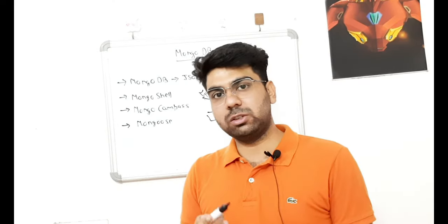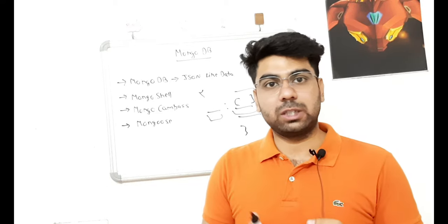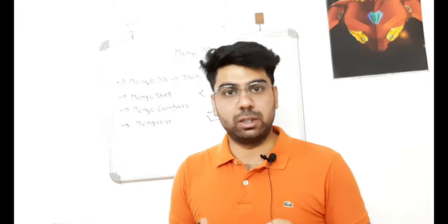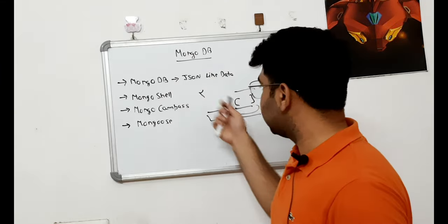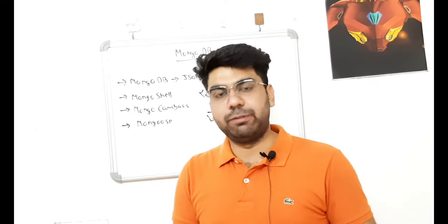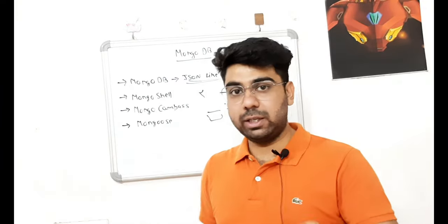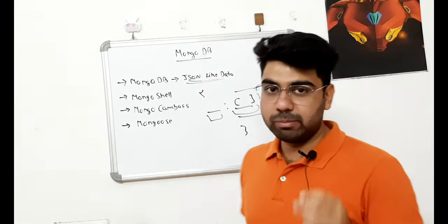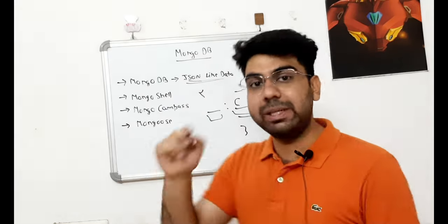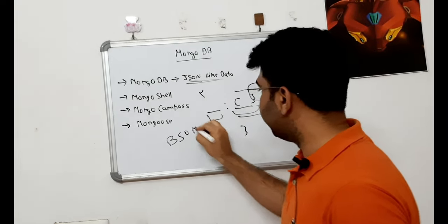Because it stores data in JSON structure, it becomes very fast in terms of using commands on it — retrieving the data, fetching the data, and other operations. So we call it JSON-like data. But behind the scenes, it's actually stored as BSON.